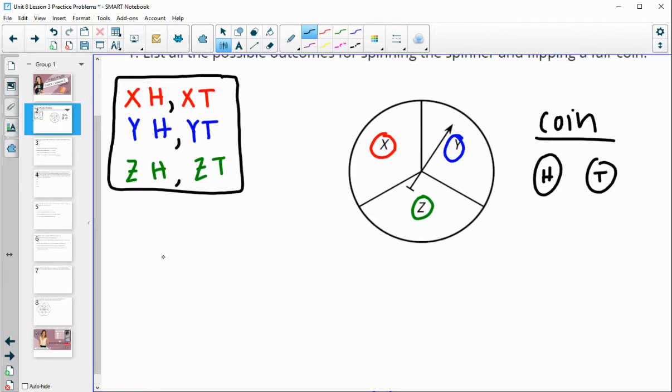Again, you can also do different tree diagrams. So you could do X and the options if you spin an X are to get tails or heads. You could also spin a Y and get heads or tails, and you could also do Z and get heads or tails. So then your sample space you would write out by saying, all right, I've got X with T and H, just like I did. Y with T or H, Z with T or H.